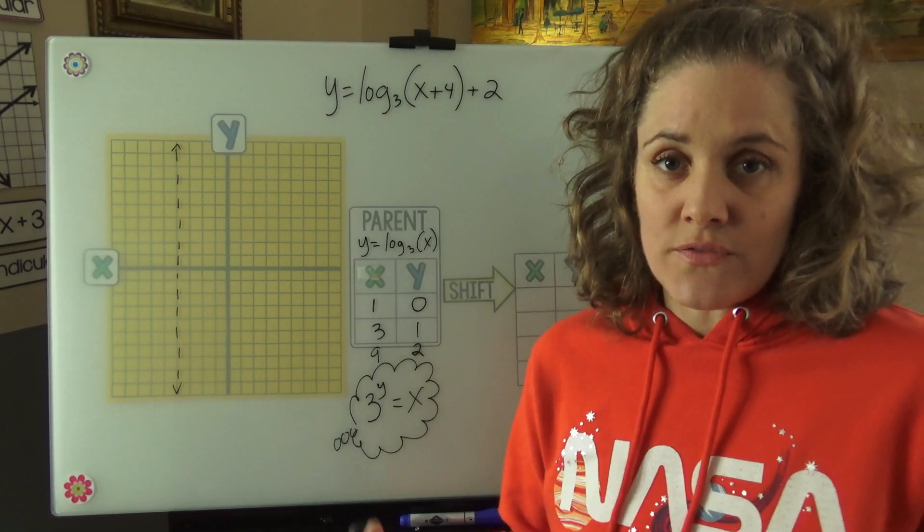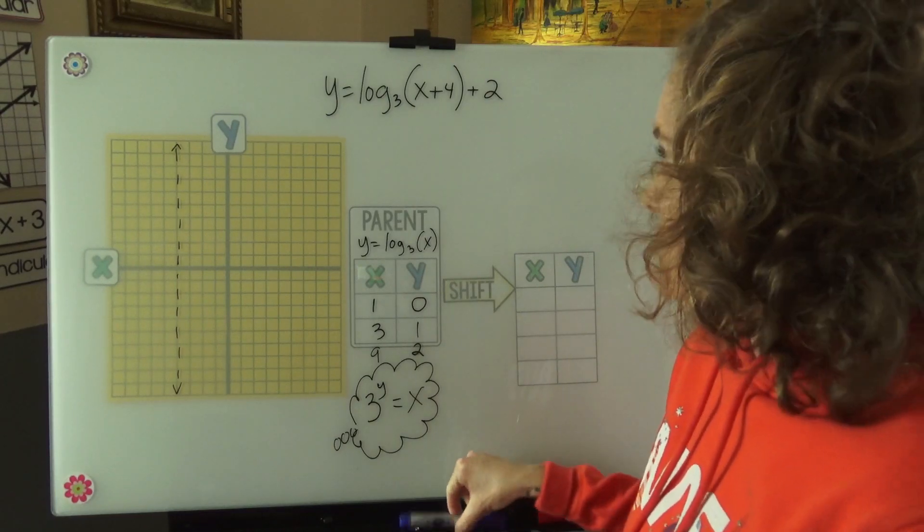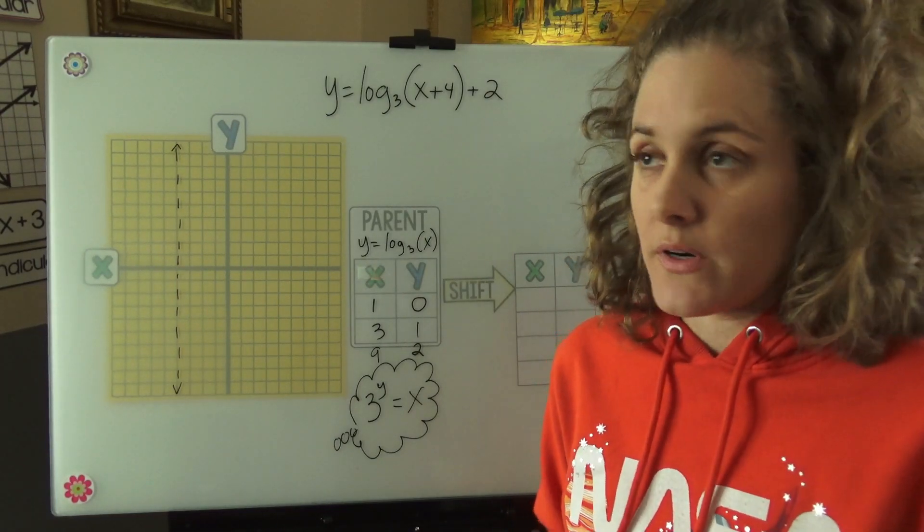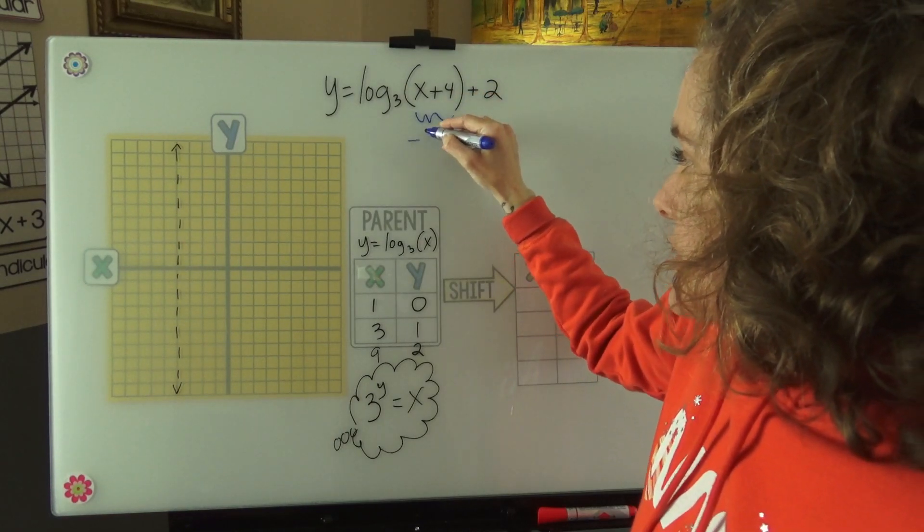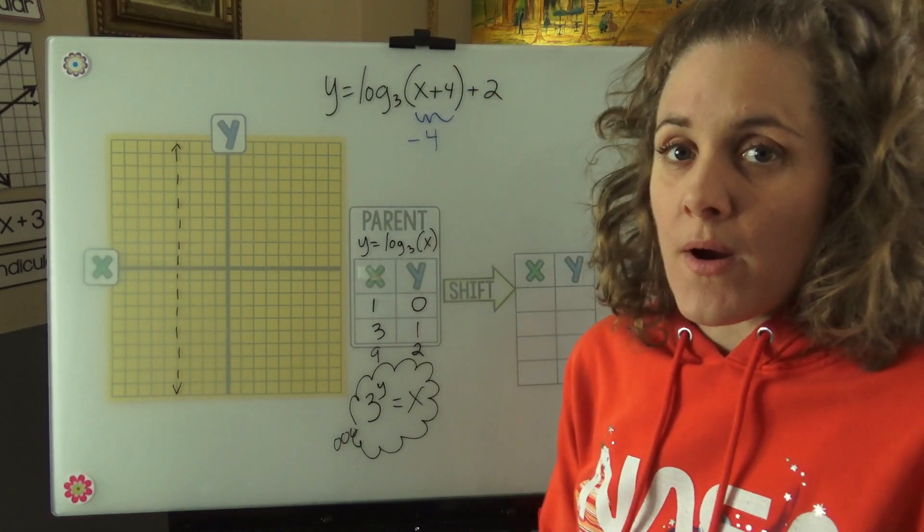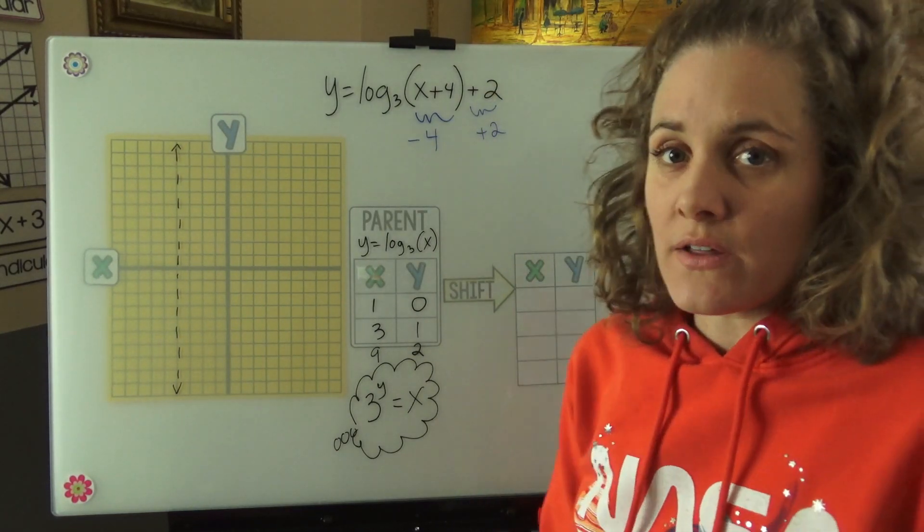Okay, so now let's shift these points. Let's go back to our original equation here and look at what our shifts were. We had a plus 4 inside. We know that inside is opposite, so we're going to be subtracting 4 from our x values. We have a plus 2 here, so we're going to be adding 2 to our y values.